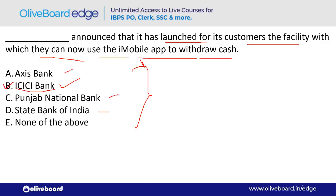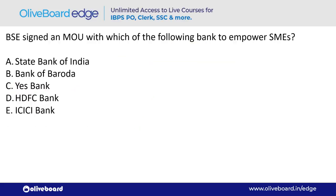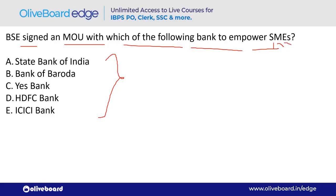BSE signed an MOU with which bank to empower SMEs (Small and Medium Enterprises)? The answer is Yes Bank — option C. BSE stands for Bombay Stock Exchange. PNB is headquartered in New Delhi, and Punjab & Sindh Bank is also in New Delhi.